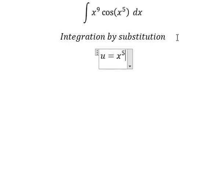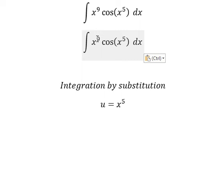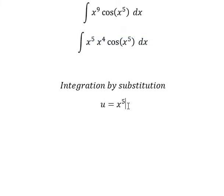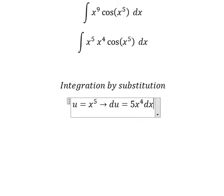x to the power of 5. If we look carefully at x^9, that's x^5 multiplied by x^4. Now we need to find the derivative of this, and we have 5x^4 dx. Next we divide both sides by 5.